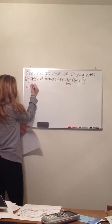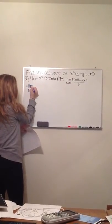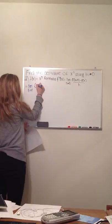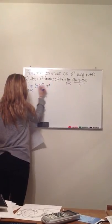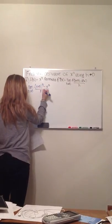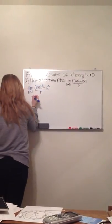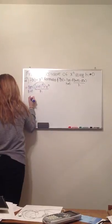Limit as h approaches 0 would equal x plus h cubed minus x cubed all over h. Next, we're going to distribute the x plus h cubed.